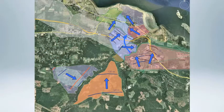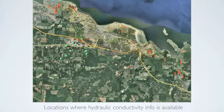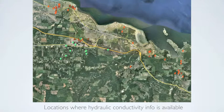The depth to water measured in the wells has given us the information to estimate the slope of the water table. We now have an estimate of the direction of the water, shown with the blue arrows, and the slope of the water table, indicated by the water table elevation lines. The Ministry of Environment has tabulated information about the estimated hydraulic conductivity of aquifers after compiling and reviewing engineering reports. The red symbols show the locations where data about hydraulic conductivity is available.